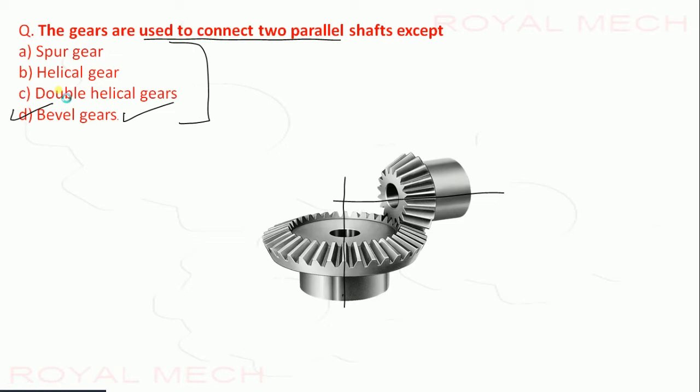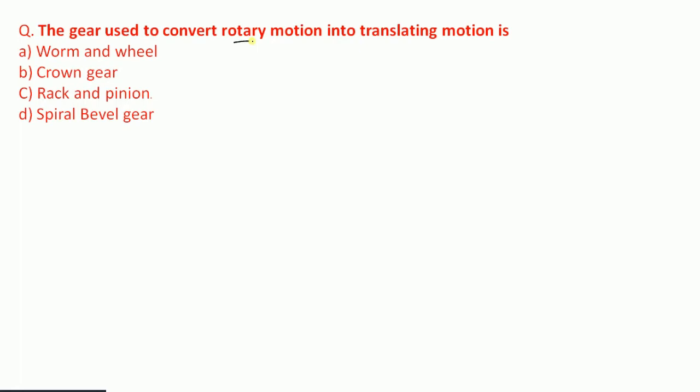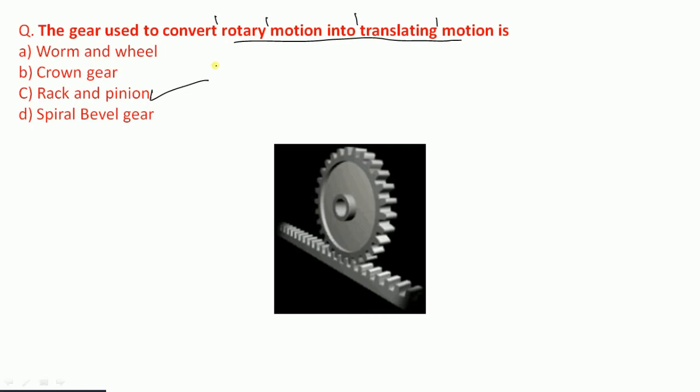Question 2: The gear used to convert rotary motion into translating motion is? We know that is rack and pinion. Therefore option C is the correct answer.